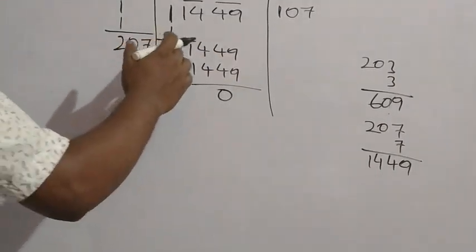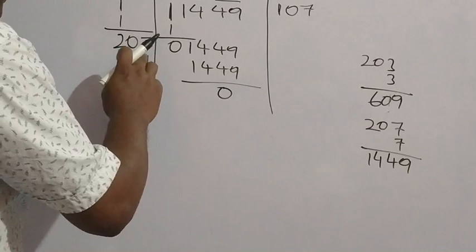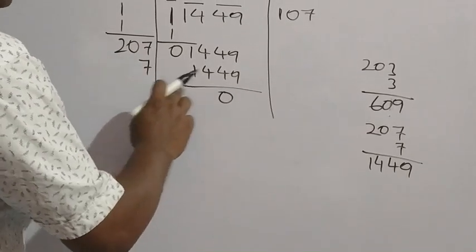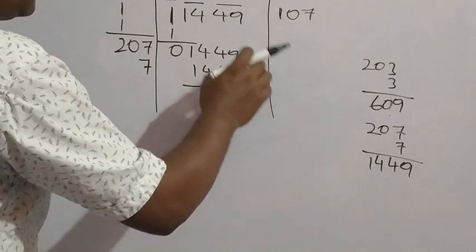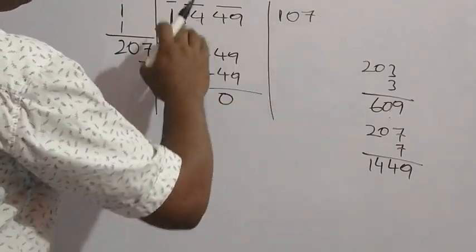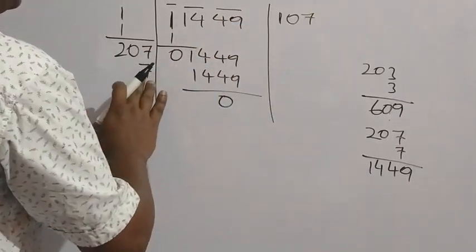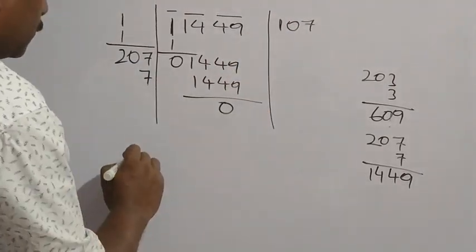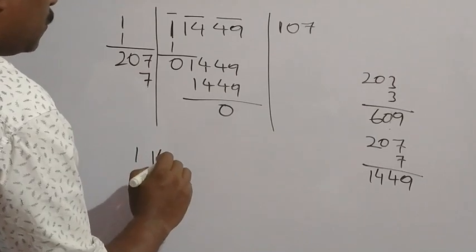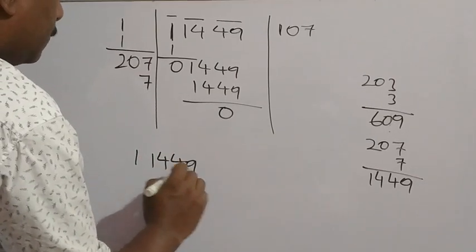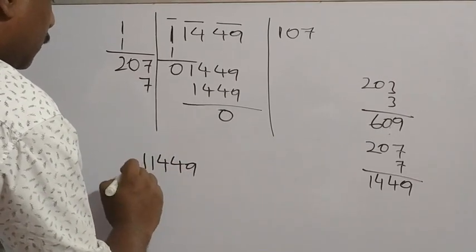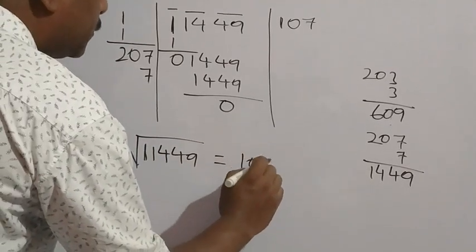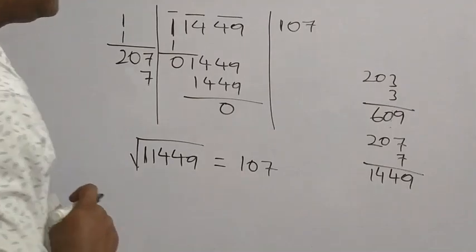Since it is totally divisible, we add 7 + 7 = 14 to get the next divisor step as 214. But no more digits are given, so we stop. The answer is 107. The square root of 11449 is equal to 107 by the long division method.